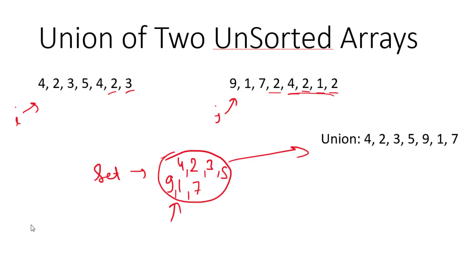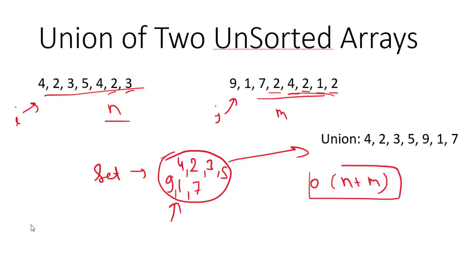We solve this in O(n + m) time complexity because we iterate through the first array of n elements and the second array of m elements. However, we also use O(n + m) space complexity because we're using a set. In the worst case, all elements across both arrays are unique, so the set holds n + m elements.